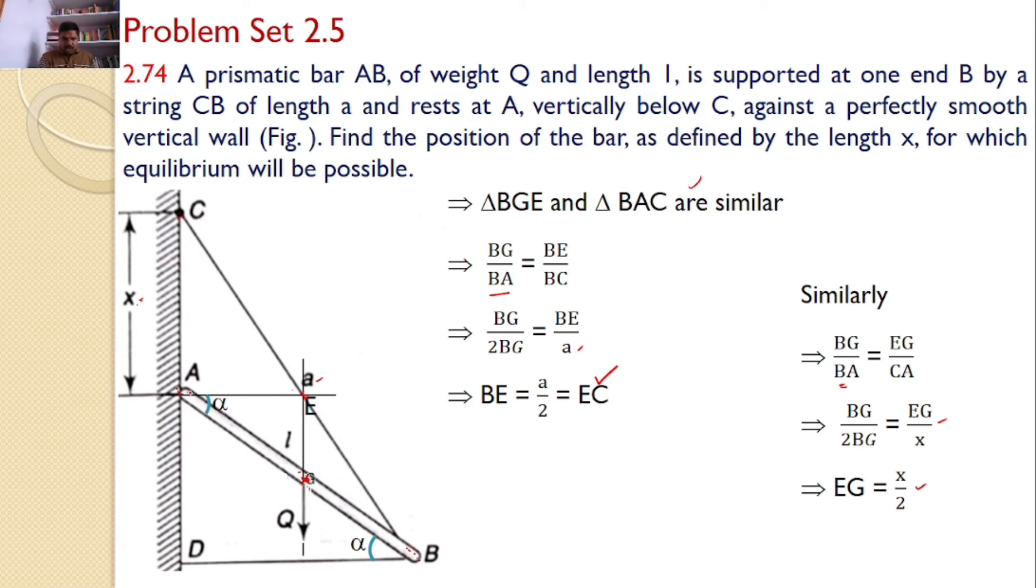Next you can also find a small right angle triangle here, AEG. From this sine alpha, if I write the equation, sine alpha is equal to EG by AG. You know that AG is equal to L by 2, half of that. EG value, just now you calculated that value is x by 2. So if you substitute here, then I will get sin alpha is equal to x by L.